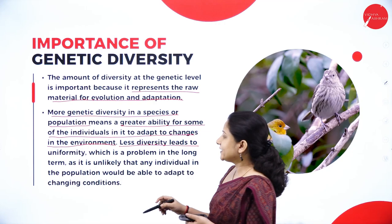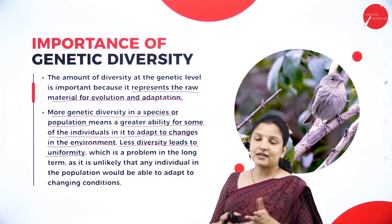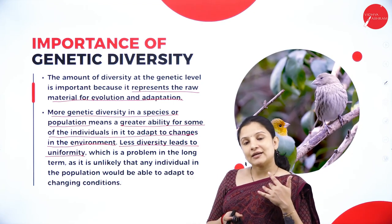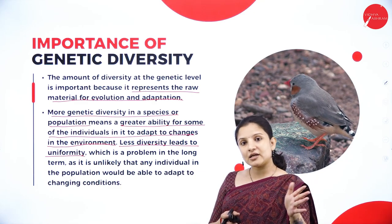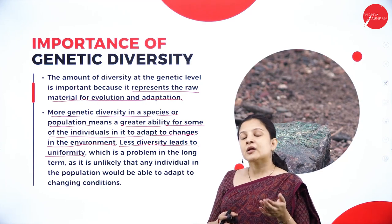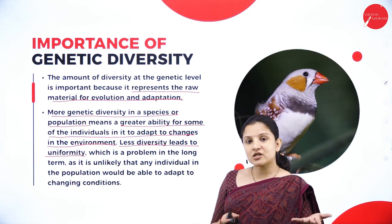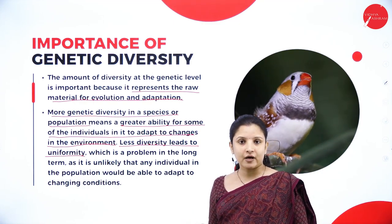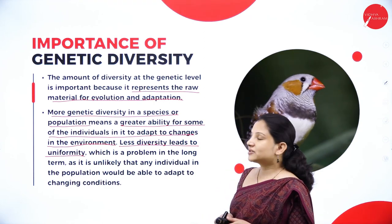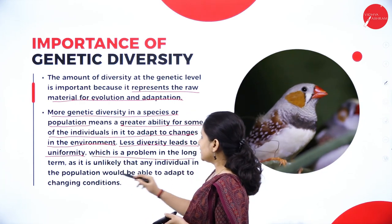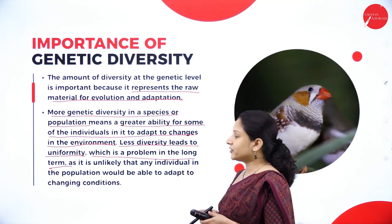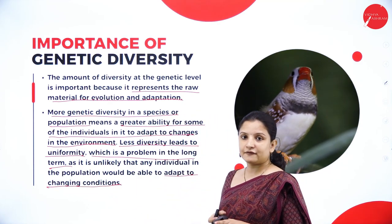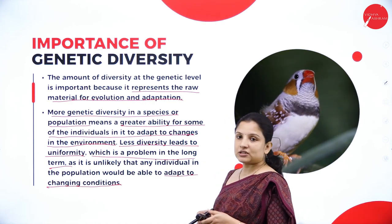Less diversity leads to uniformity. If there is no diversity among organisms, all will look the same. But organisms living in the polar region should be different from those in a high-temperature region. In the polar region, they will have a lot of fur, but organisms in a high-temperature region cannot have that amount of fur — they will not survive. So less diversity can lead to uniformity, which is a problem in the long term, as individuals in a population would be unlikely to adapt to changing conditions. For an organism to adapt to its particular environmental habitat, genetic diversity is very important.